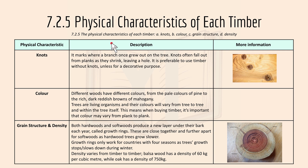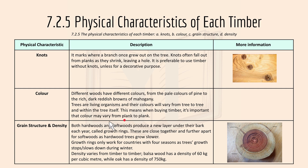7.2.5 covers the physical characteristics of each timber. Knots mark where a branch once grew out of a tree, and they often fall out from planks as they shrink, leaving a hole. It's preferable to use timber without knots unless for decorative purposes. Different woods have different colours, from the pale colour of pine to the rich dark reddish brown of mahogany, and colour can vary from tree to tree and plank to plank. Both hardwoods and softwoods produce a new growth ring each year. These are closer together in hardwoods as hardwood trees grow slower, and growth rings only apply in countries with seasons where growth slows during winter.